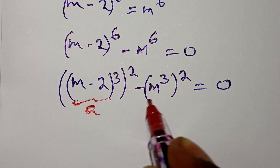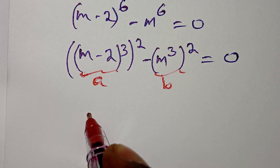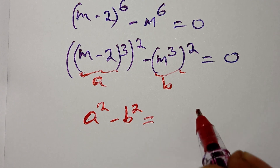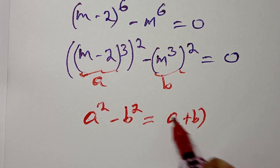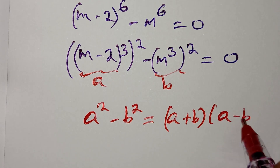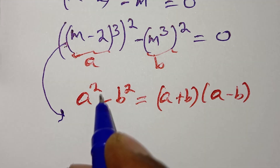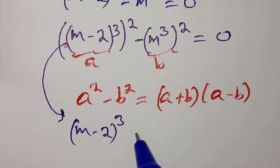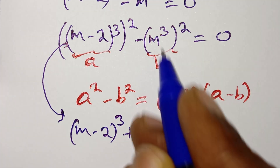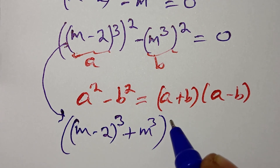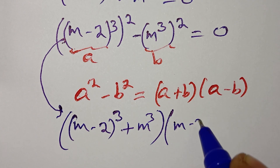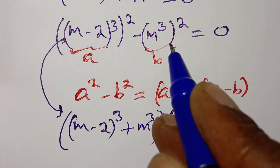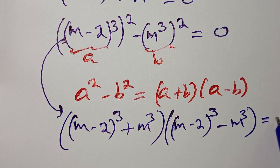So if a equals (m minus 2)³ and b equals m³, this is the same as a squared minus b squared, which factors as (a plus b) times (a minus b). So based on this, it becomes: [(m minus 2)³ plus m³] times [(m minus 2)³ minus m³] is equal to 0.